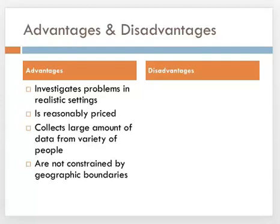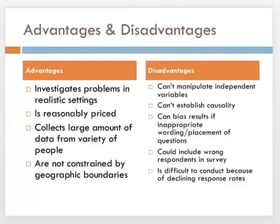Surveys are not constrained by geographic boundaries — they can be conducted almost anywhere. However, there are some disadvantages. The most important disadvantage is that you don't manipulate the independent variable the same way you do in a true experimental or quasi-experimental design. You can assign a control variable or a treatment to respondents in a survey to do more of an experimental design, but there are restrictions for how that can be done in a survey system like Qualtrics.